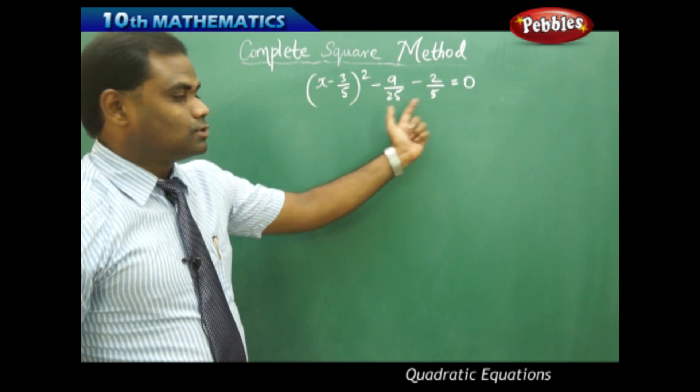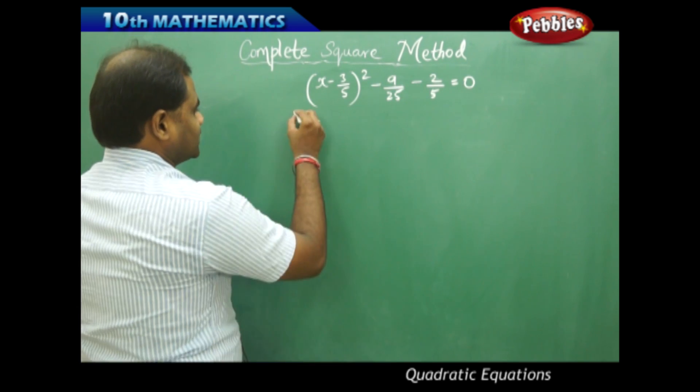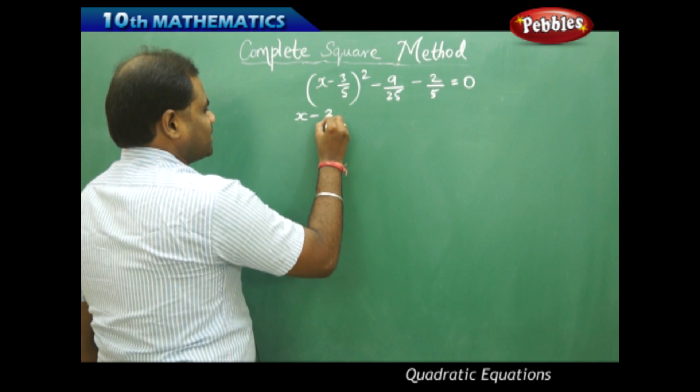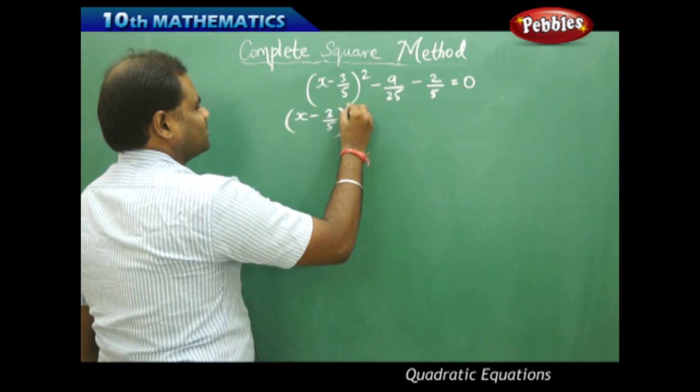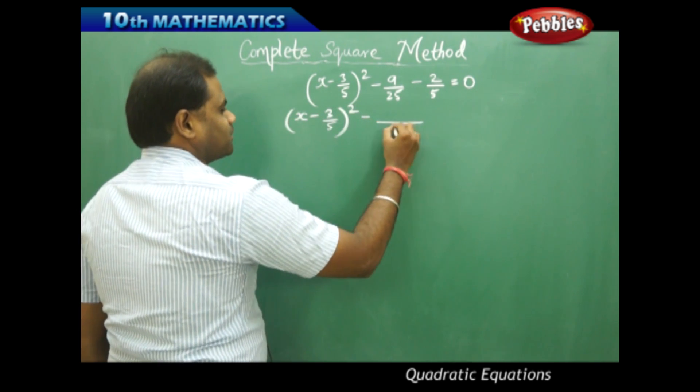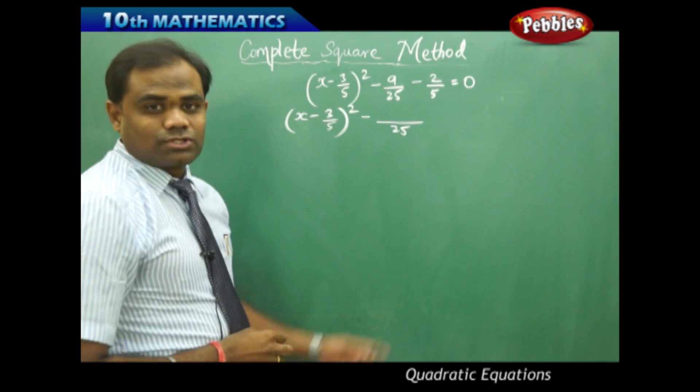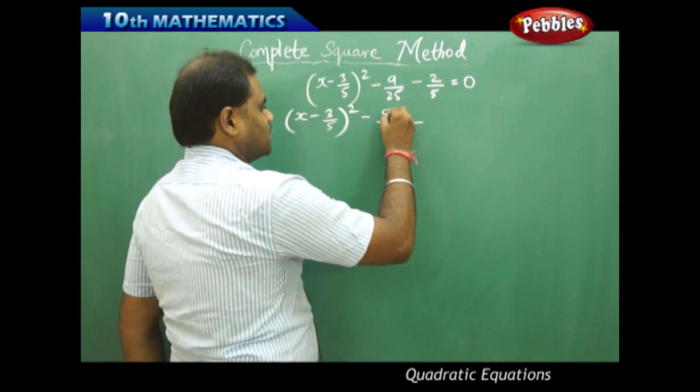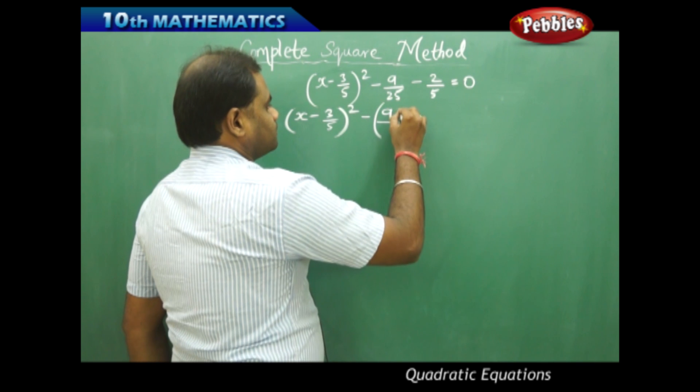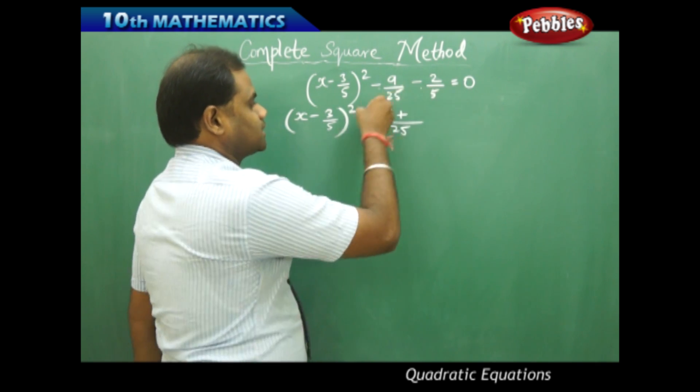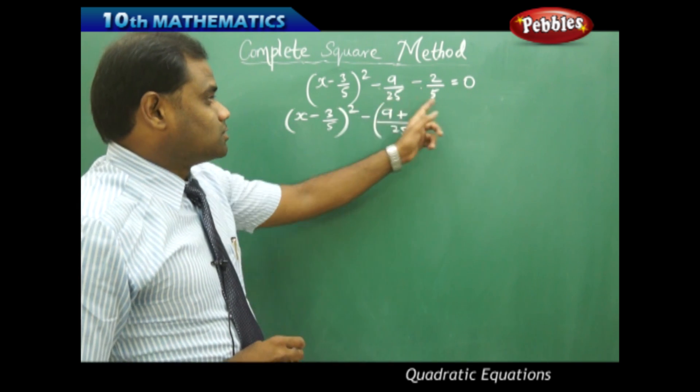Now let's take LCM on these two constant terms so that I get (x - 3/5)² minus 25 being the LCM reduces to 1 times 9 is minus 9, and this would be plus because I have taken minus common together from these two terms outside.